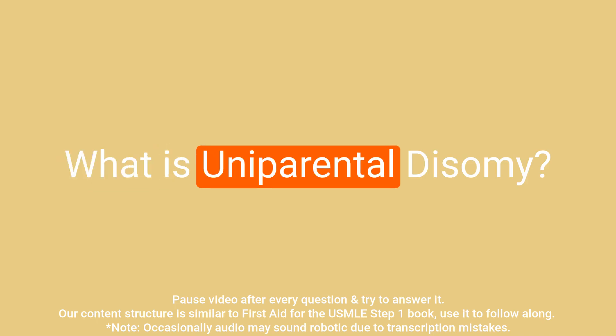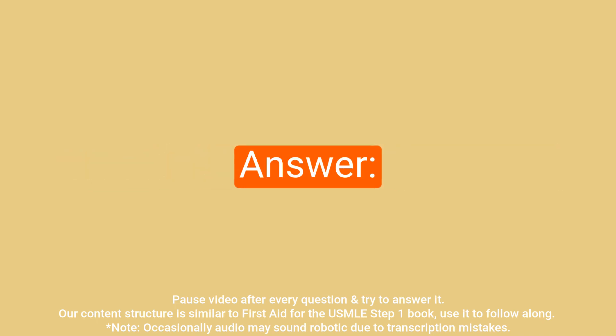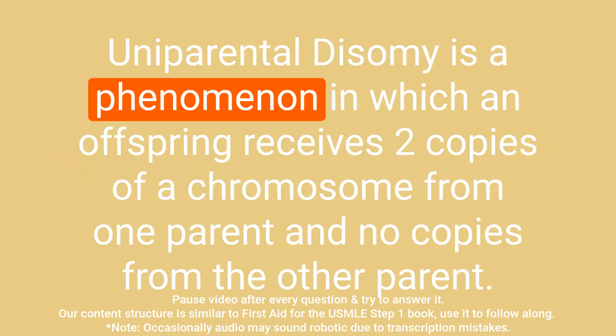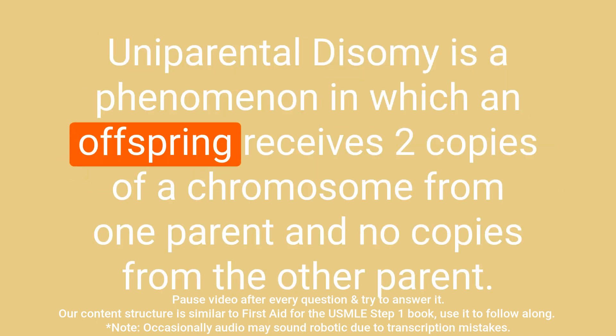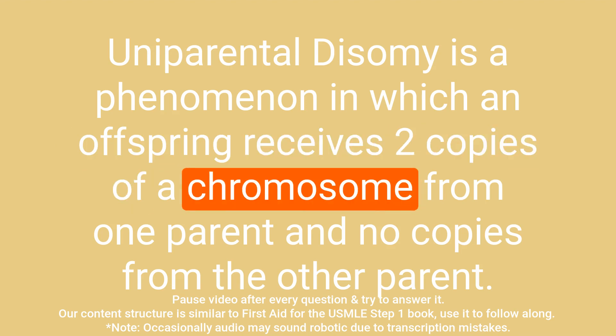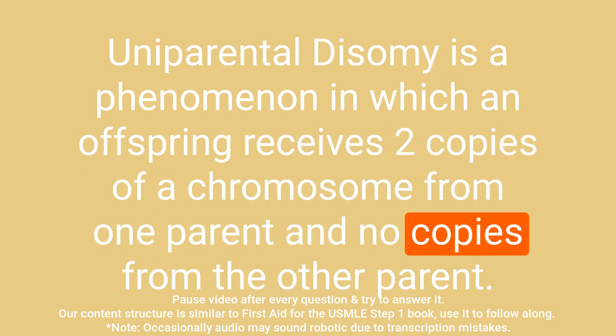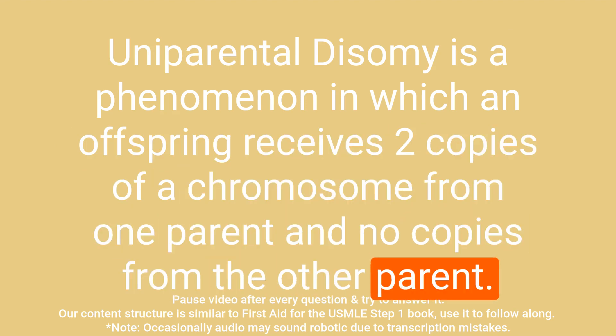Question: What is uniparental disomy? Answer: Uniparental disomy is a phenomenon in which an offspring receives two copies of a chromosome from one parent and no copies from the other parent.